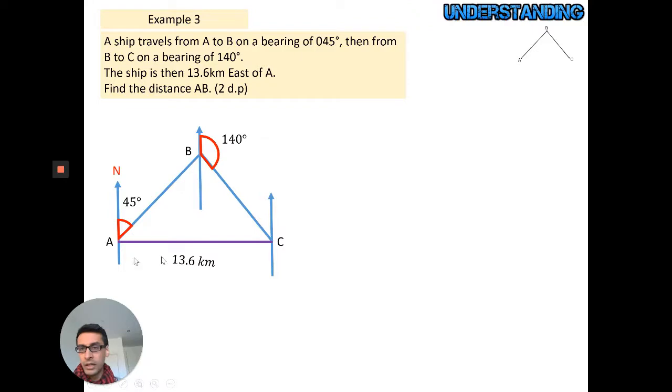I know that this has to be 135 because that and this red 45-degree angle are both co-interior. And I know that this has to be 45, this green 45-degree angle, because this red line here goes east from C—that's actually given in the question. Then I can also work out